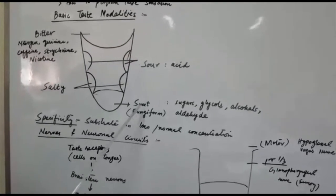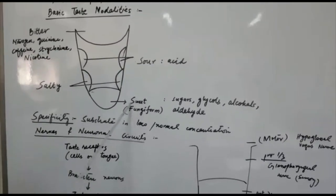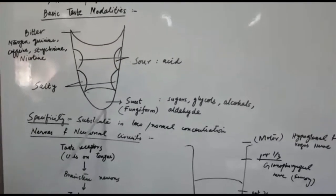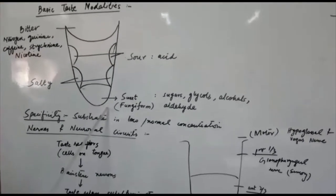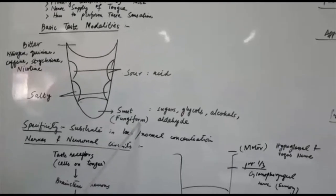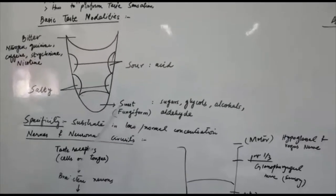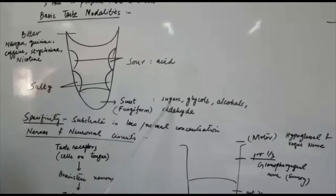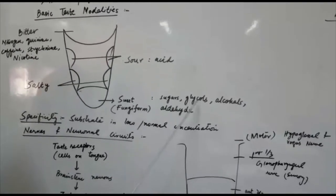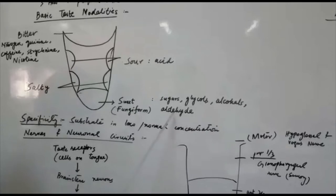As far as sweet taste is concerned it is usually felt on the tip of the tongue as you can see and usually fungiform papillae are present here which send the sweet sensation. Sweet sensation is given by compounds containing sugars, glycols, alcohols and aldehydes.